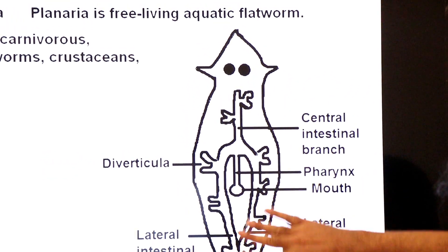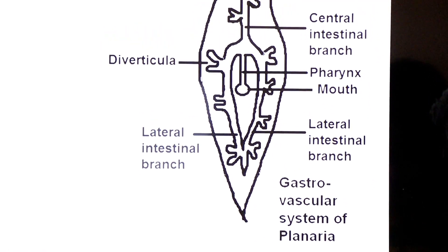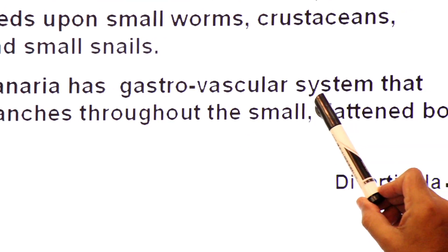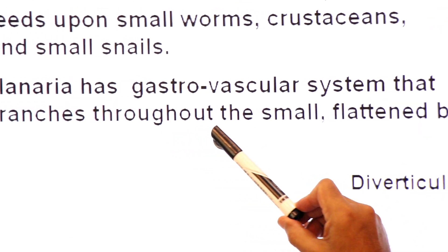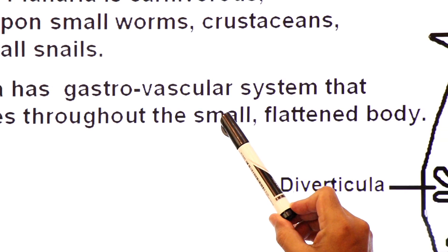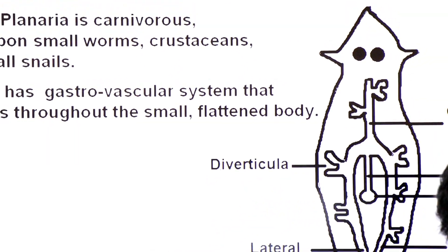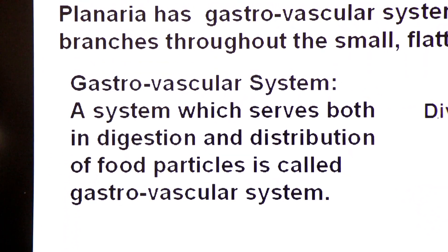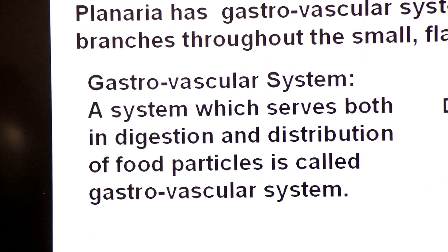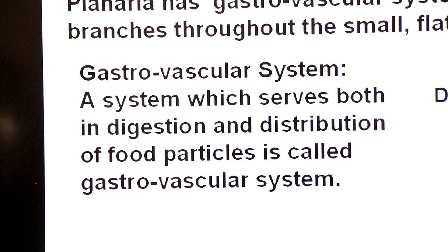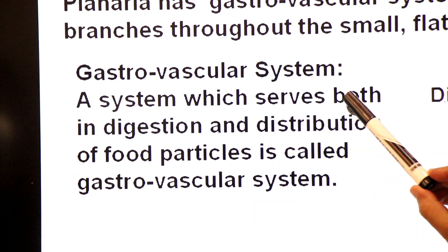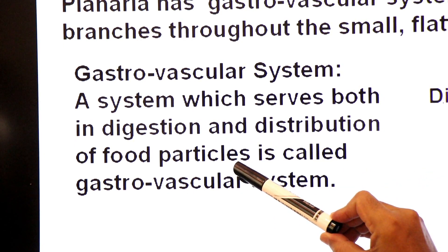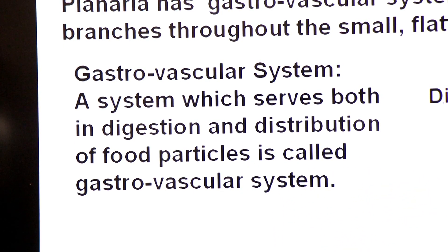So planaria has a gastro-vascular system that branches throughout the body with its small flat body. A system which serves both in digestion of food as well as distribution of food particles is called the gastro-vascular system.